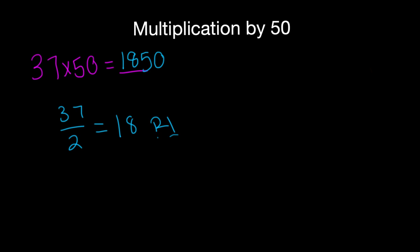Let's try another example. Let's try 62 times 50. Divide 62 by 2, and you get 31. So make 31 your first two digits, and since you have a remainder of 0, the last two digits should be 00.